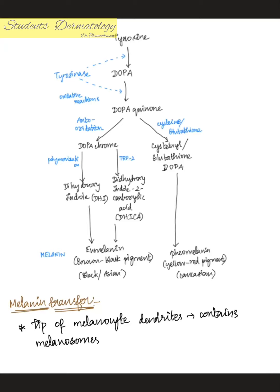In the pathway: tyrosine is converted to DOPA by tyrosinase (hydroxylation), then DOPA to DOPAquinone (oxidation). DOPAquinone gives dopachrome and also combines with cysteine or glutathione to form cysteine-DOPA or glutathione-DOPA. Finally you have eumelanin — a brown-black pigment mainly found in Black or Asian people — and pheomelanin, a yellow-red pigment found in Caucasian people.